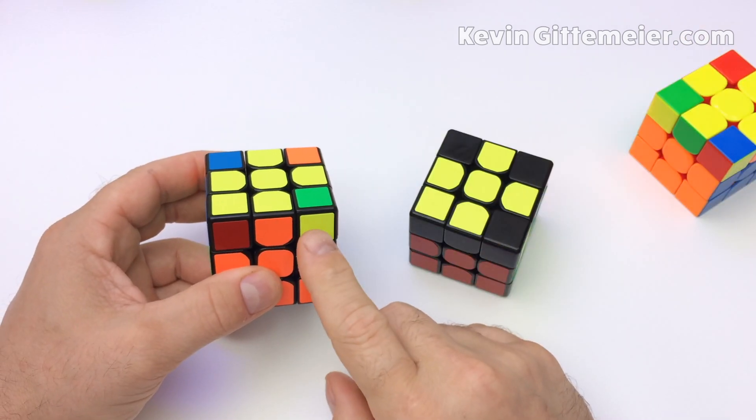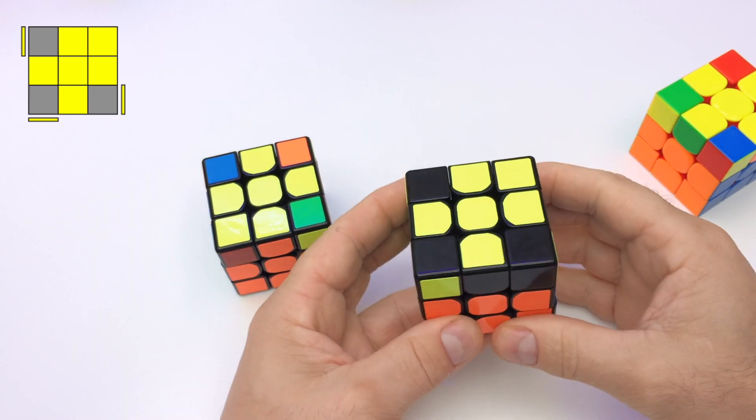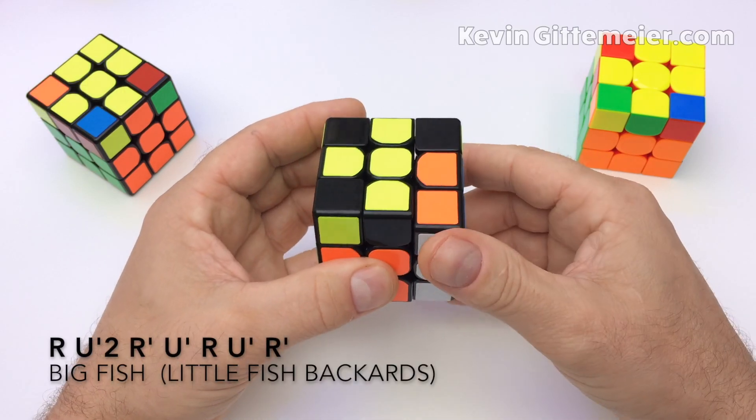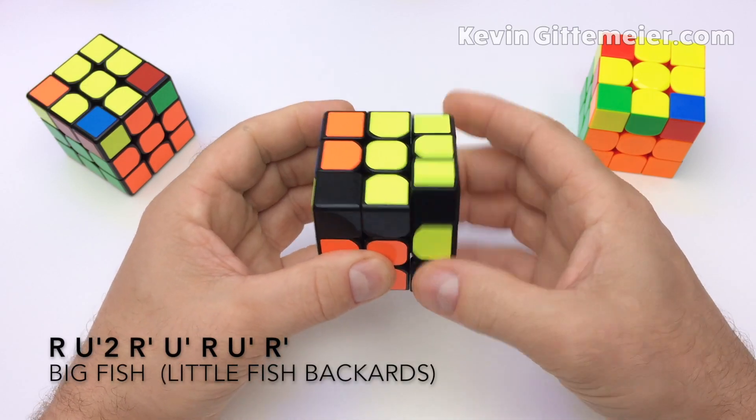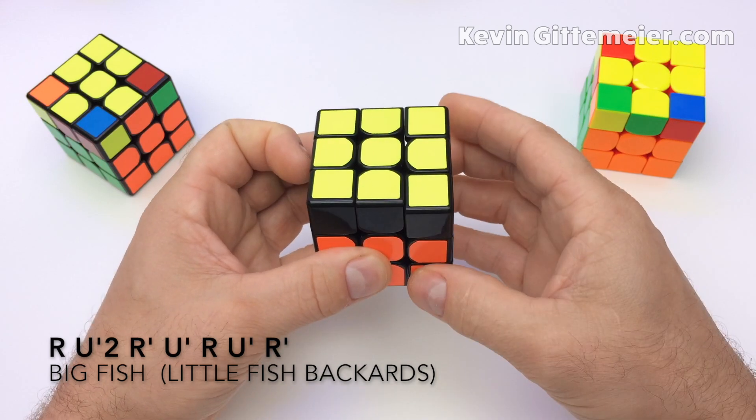If there's no sticker right here facing you then you have big fish and you perform the inverse of little fish algorithm which is right, up prime, up prime, right prime, up prime, right, up prime, right prime.